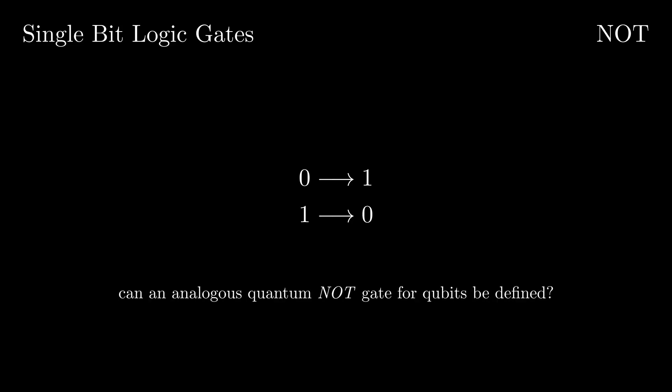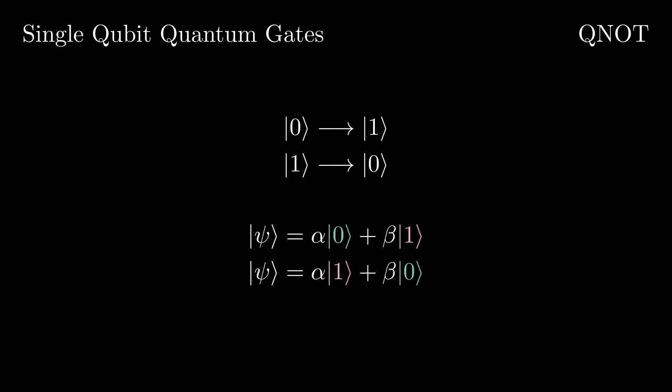Can an analogous quantum NOT gate for qubits be defined? Merely switching the 0 state to 1 and vice versa doesn't really tell us what happens to the superposition of the two. The quantum NOT gate actually switches the locations of 0 and 1 in the state vector. This linear behavior actually prevents paradoxes like time travel and violating the second law of thermodynamics.